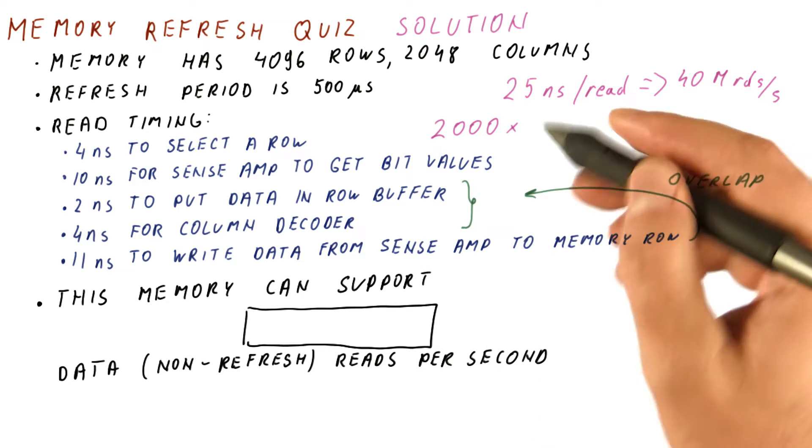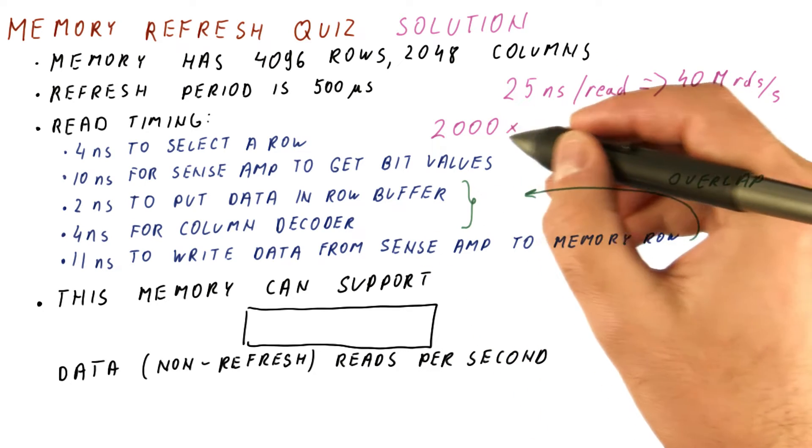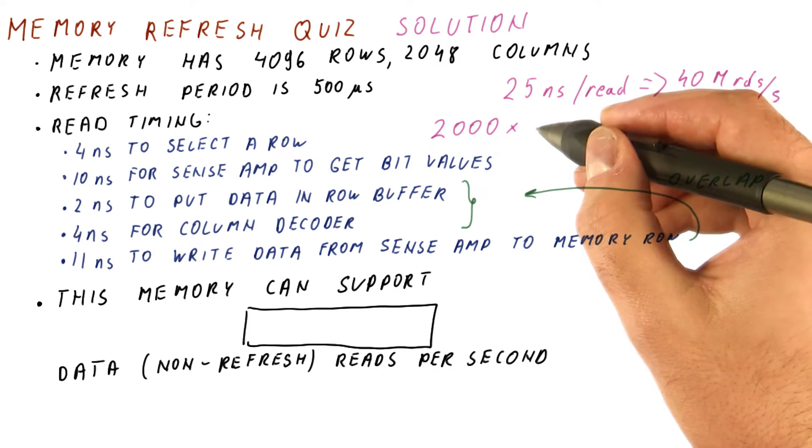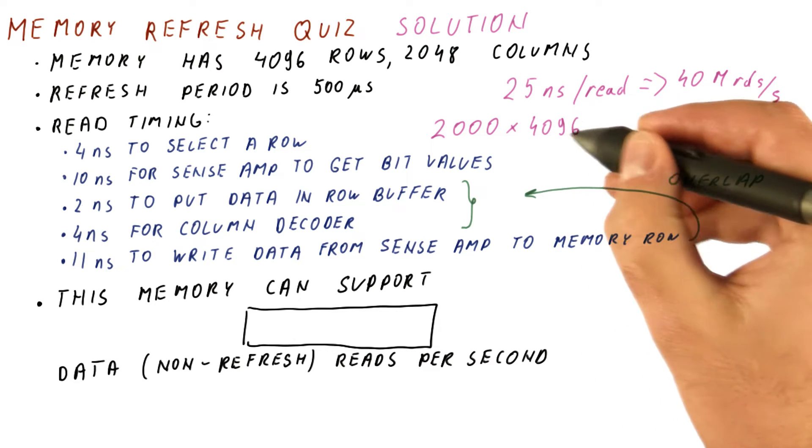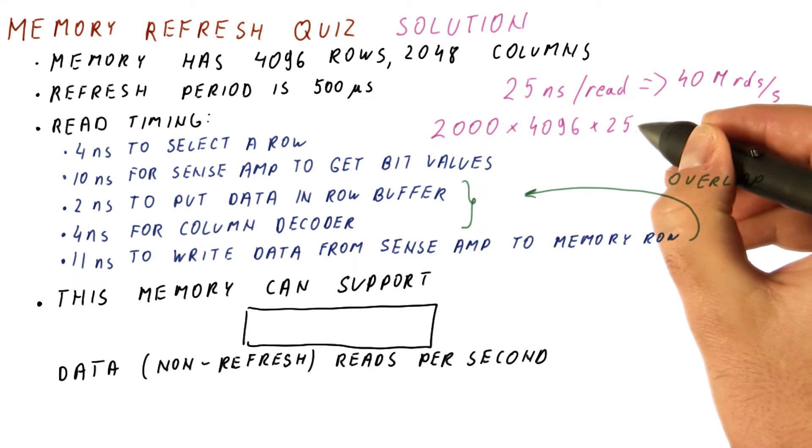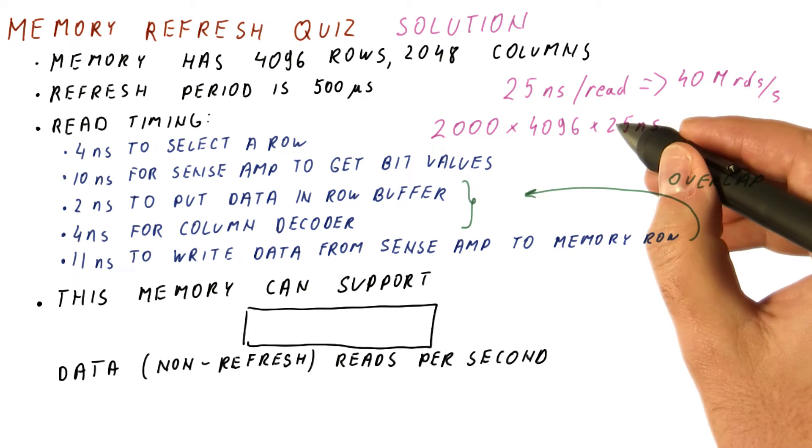Meanwhile, our memory cannot be doing the read. So really, we are spending 2,000 times 4,096 times 25 nanoseconds on refreshes.